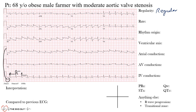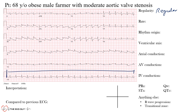If the intervals weren't consistent we would call it an irregular rhythm and then look for any regularity within it. But this is a regular rhythm. There are multiple ways to find the rate. One way that works for both regular and irregular rhythms is knowing that the standard 12-lead strip represents 10 seconds in duration.